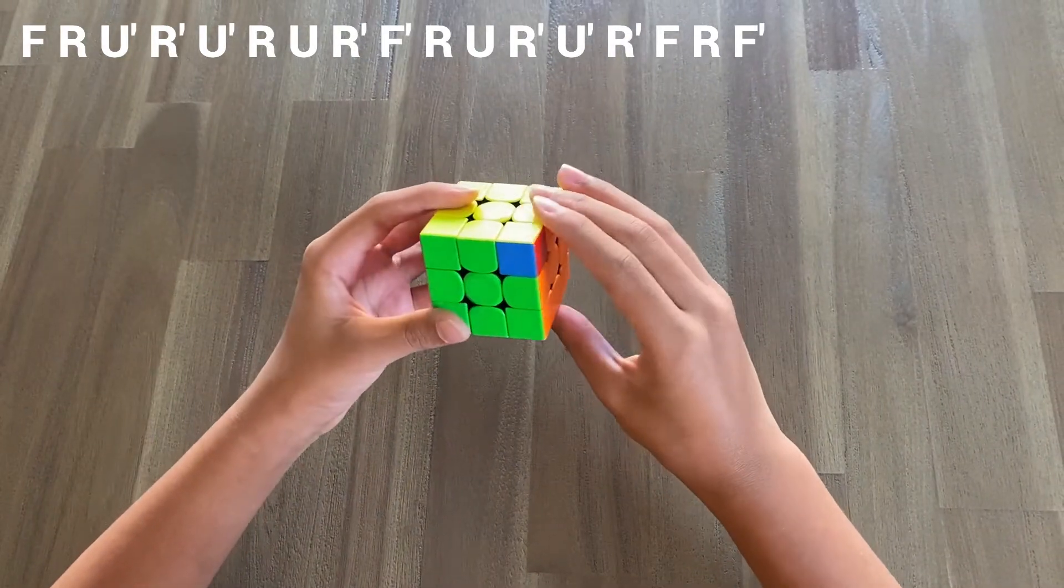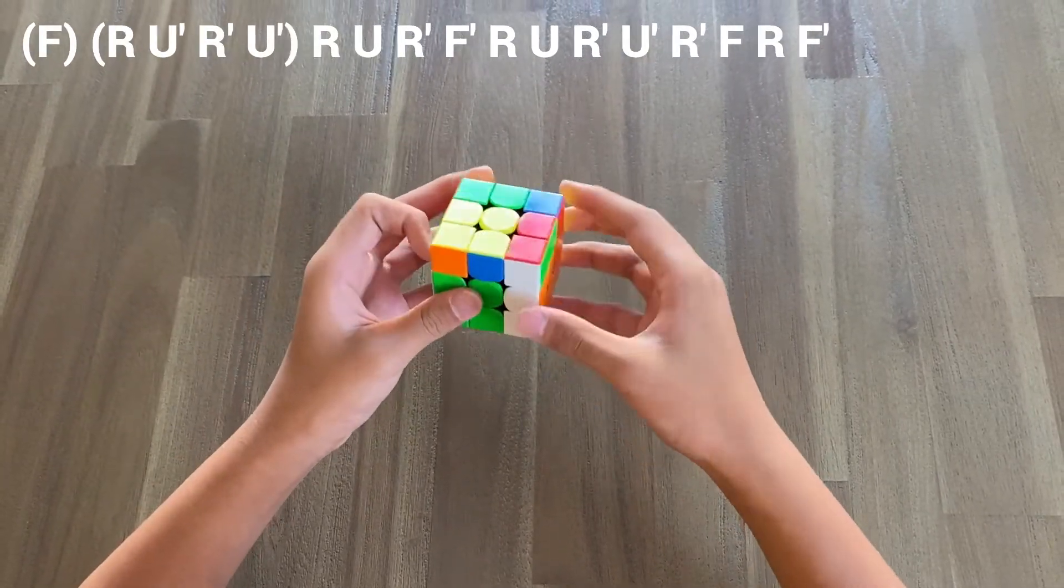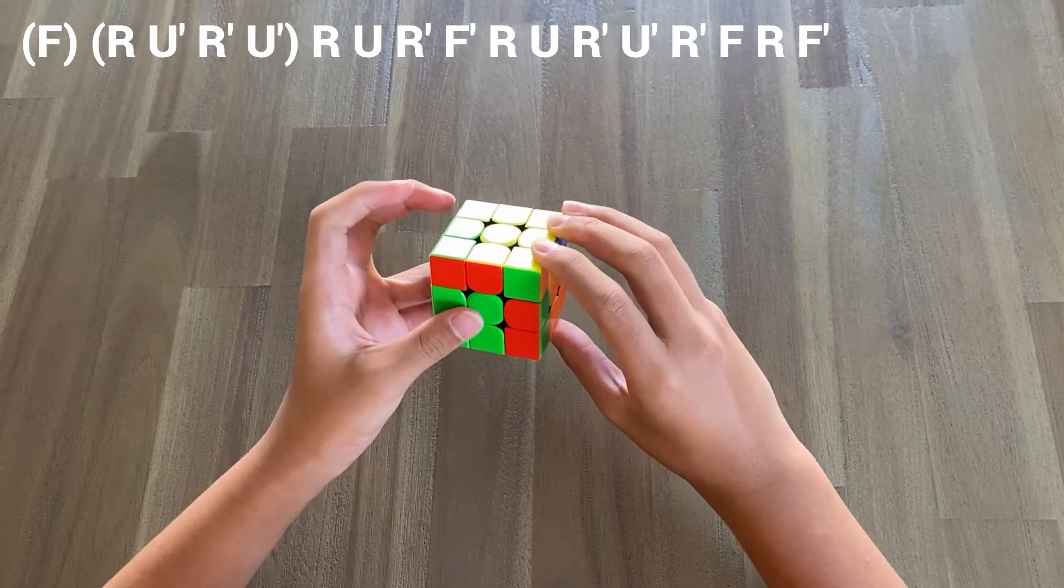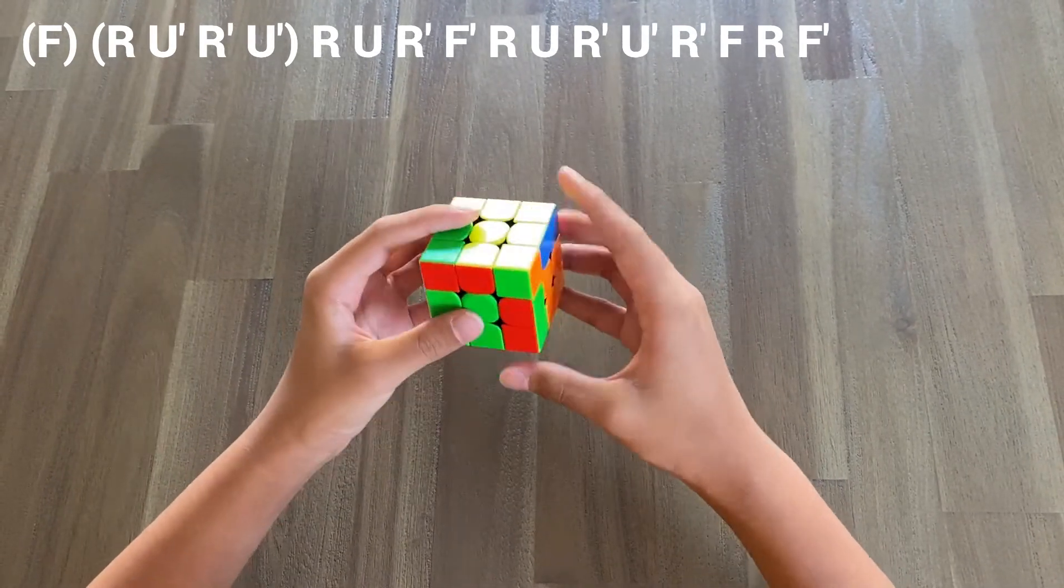First, we start with a singular F move, like this. Next, we have a trigger. As you can see, we're simply doing a set of moves that may be repeated in other algorithms.